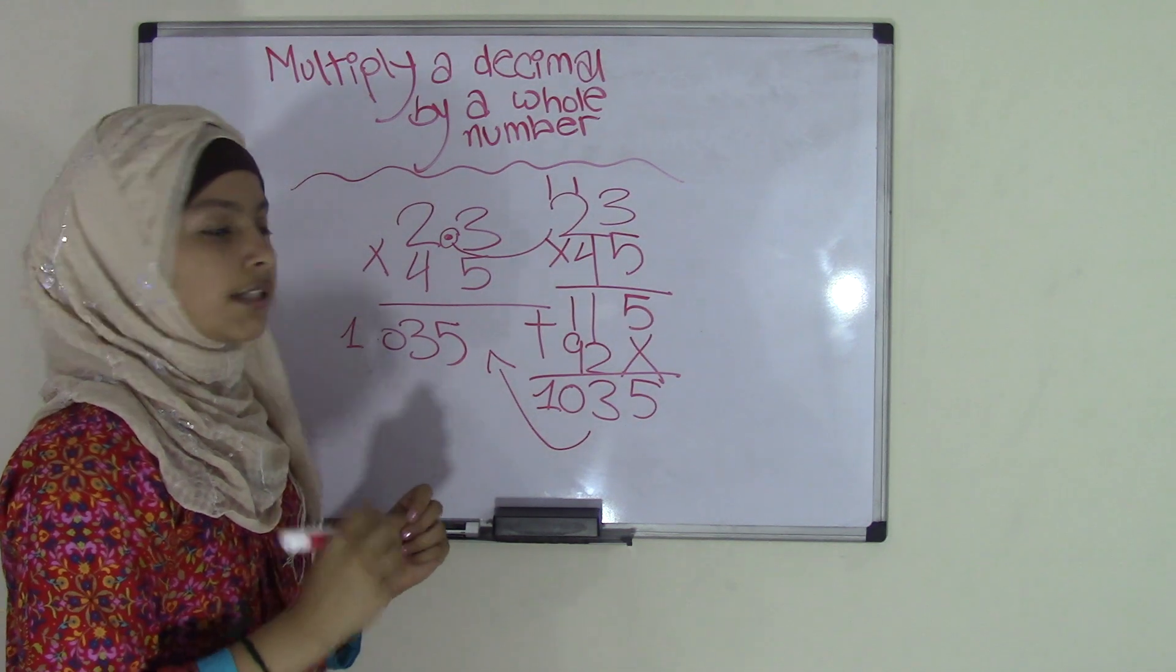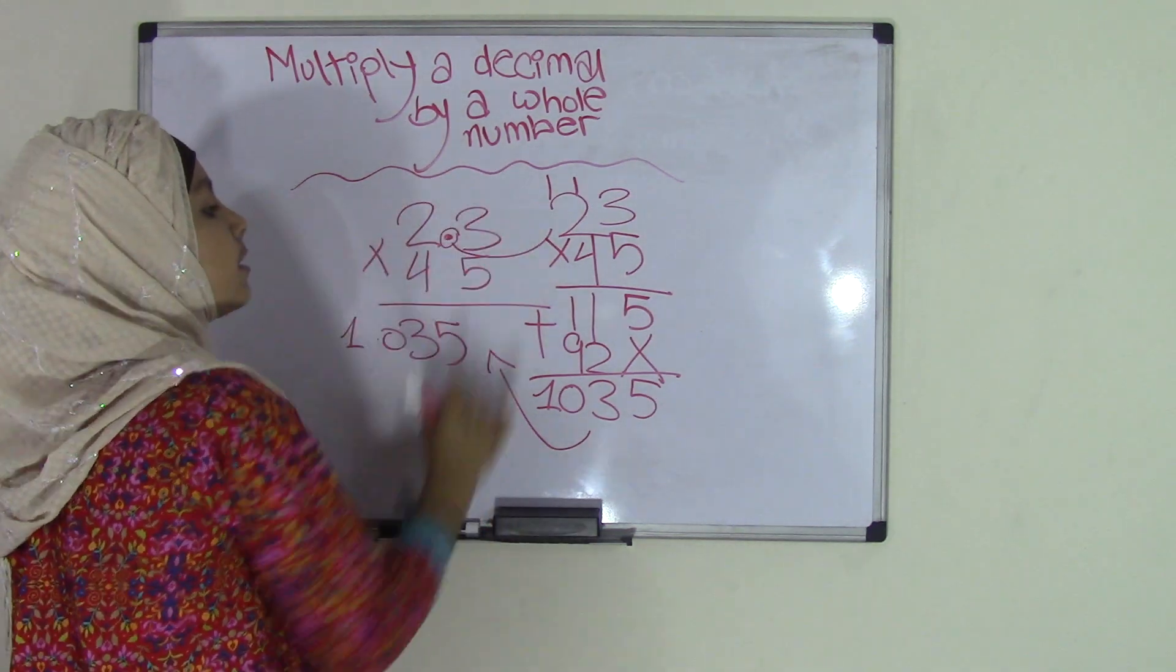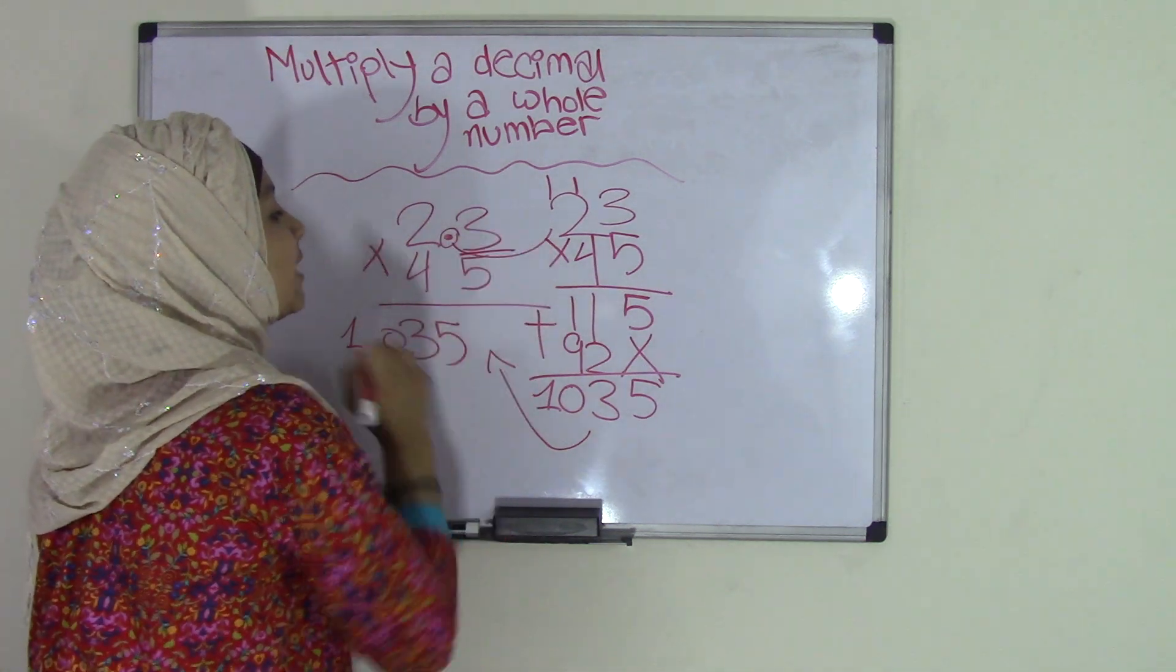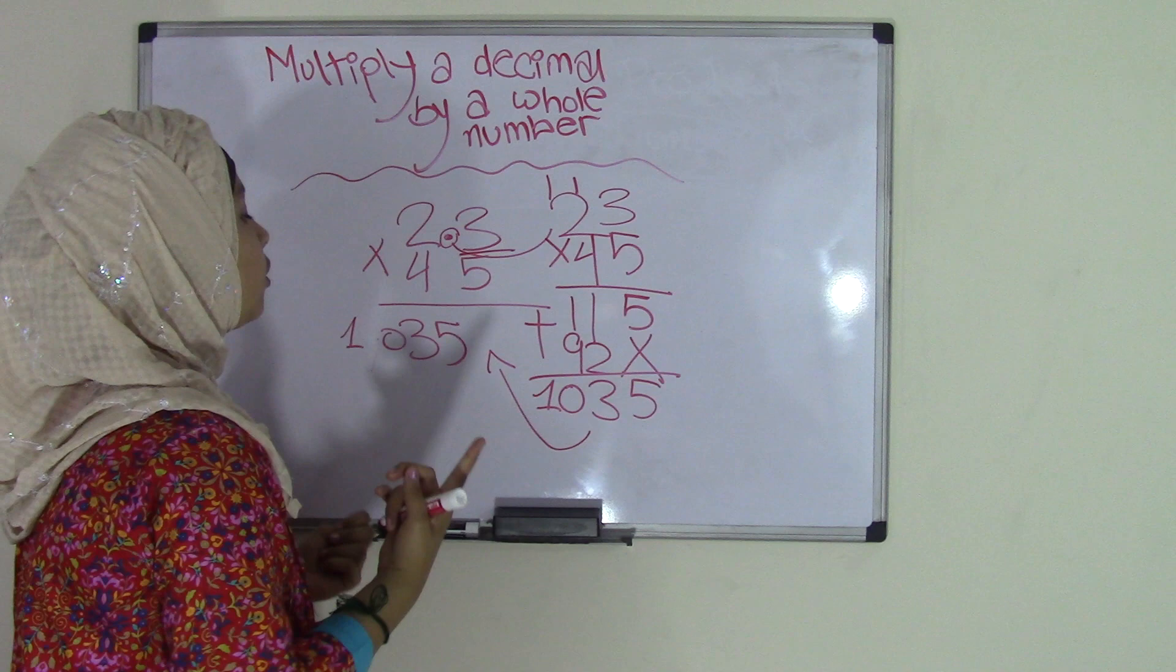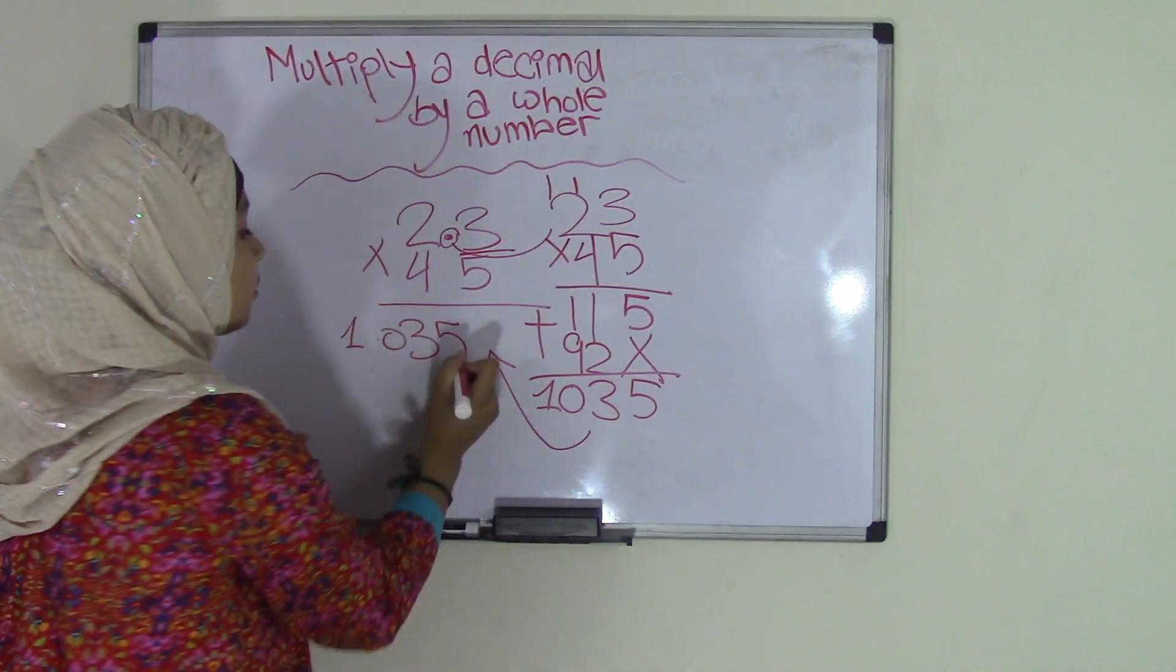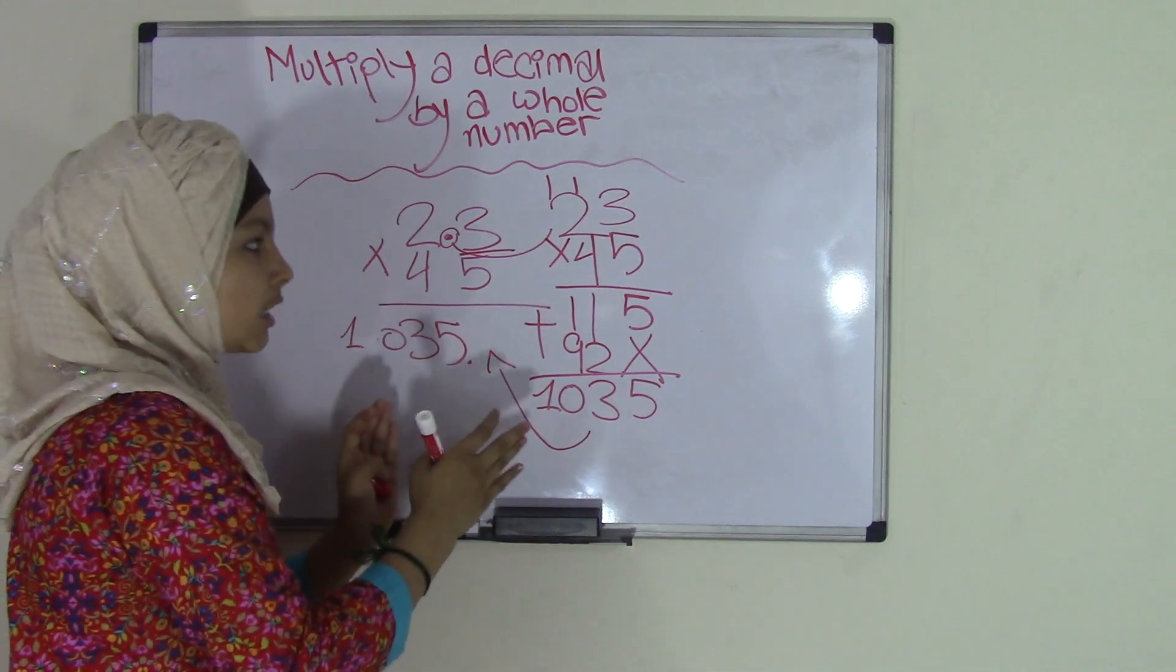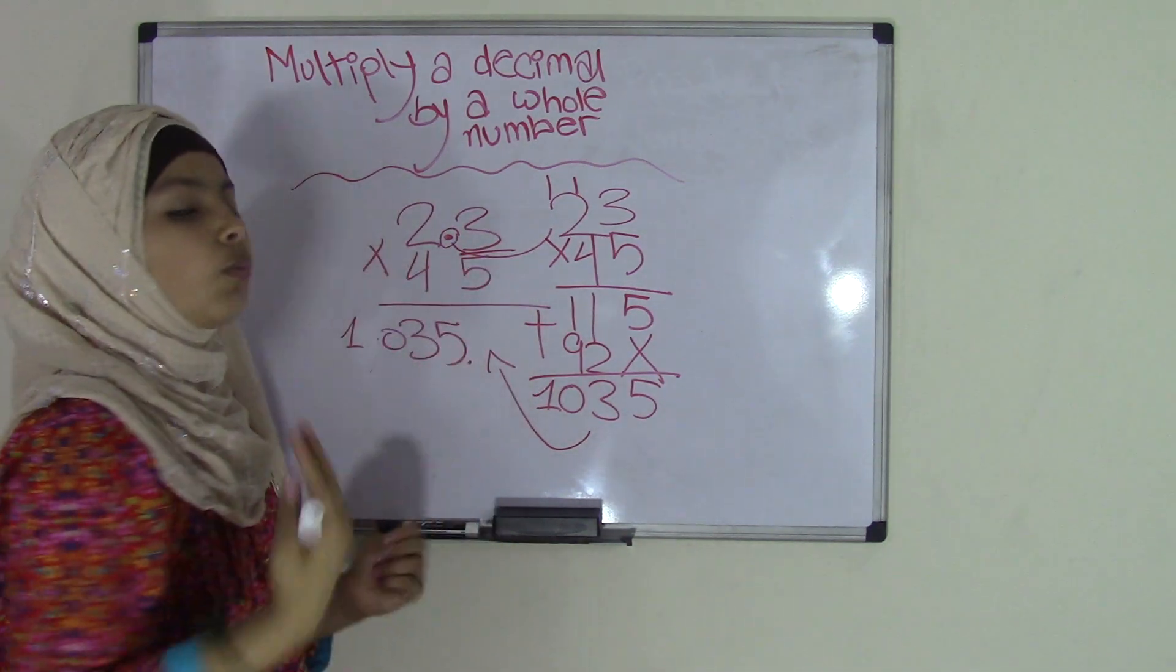And now, you count the number of decimal numbers after the decimal point. So, after the decimal point, as you can see, there is only one digit, which is 3. So, since it's only one digit, all you do is go here. Now, for 1035, that's the whole number. So, that means the decimal point is going to be at the end. What you do, you take that decimal point and you move it one place. Why one place?